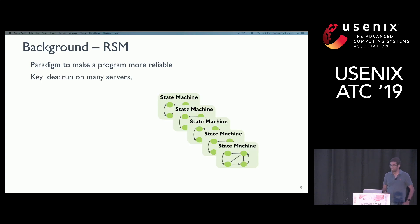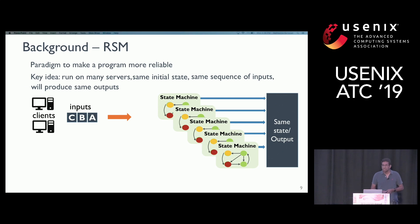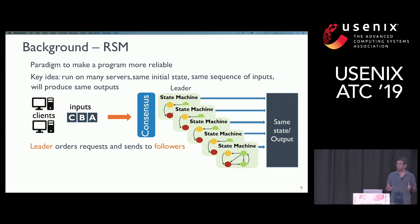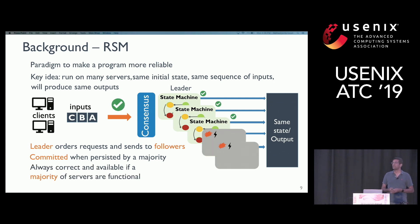An RSM is a paradigm to make programs more reliable. The key idea is you take a program and run it on several servers at the same time. If all these servers start at the same initial state and apply the same sequence of inputs in the same order, they will all produce the same outputs. To ensure this, a consensus algorithm runs as part of every replica. Practical consensus protocols use a leader — a designated replica that serializes all client requests and replicates this stream. A command is committed when it is accepted and persisted by a majority of servers. RSMs continue to operate correctly and remain available as long as a majority of servers are functional.